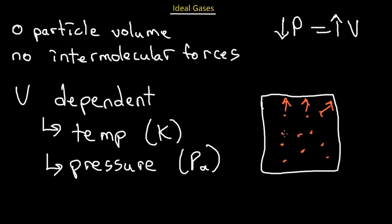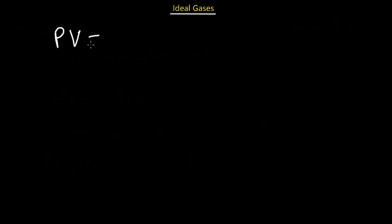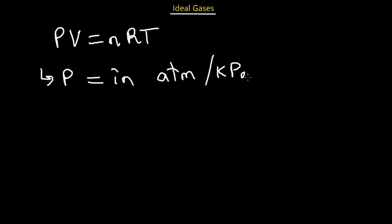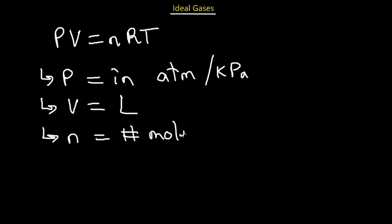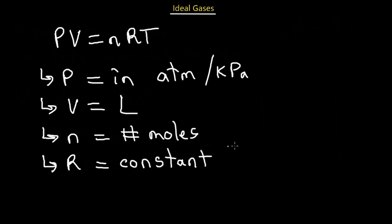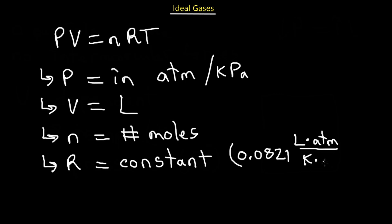The ideal gas formula is PV = nRT. P is pressure in ATM or Kilopascals depending on the units given. V is volume in liters. n is the number of moles. R is the gas constant, which is 0.0821 liters·ATM per Kelvin·mole.